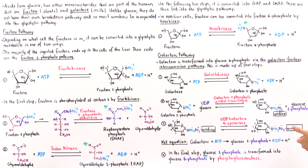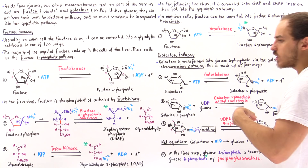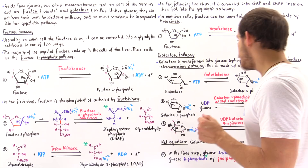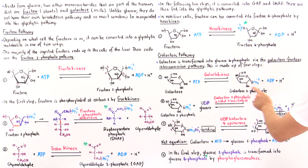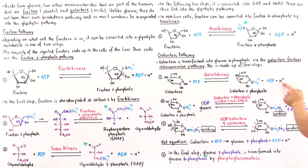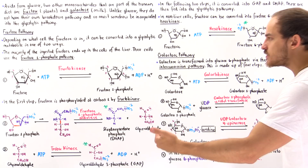So we have an enzyme known as galactokinase. Since it is a kinase, it uses an ATP and transfers a phosphoryl group from that ATP onto carbon number one of galactose, forming galactose 1-phosphate. We also form ADP and H+. This step again traps galactose inside the cell and destabilizes it.